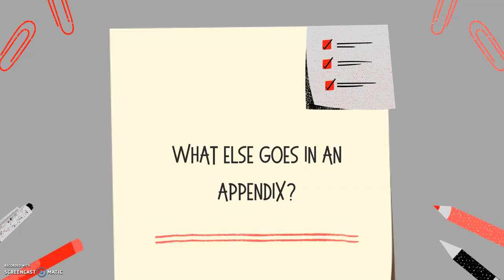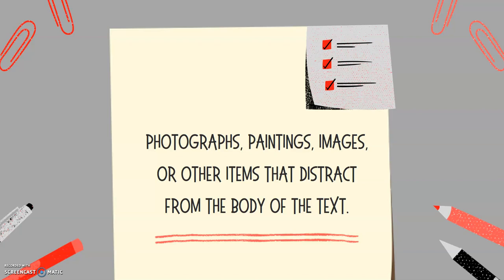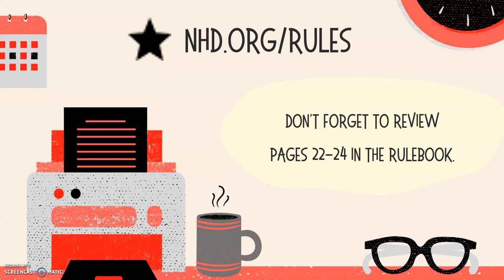What else can go in an appendix? You can include photographs, paintings, images, or other items that might distract from the body of the text. If you're doing a project on impressionist paintings and you want your reader to know what these paintings look like, you could put those paintings in your appendix. The first place you'll want to start is at nhd.org/rules, where you can get a copy of the NHD rulebook and review pages 22 to 24 on everything you'll need to know about the paper category. Keep in mind page 23 has all references to appendices.